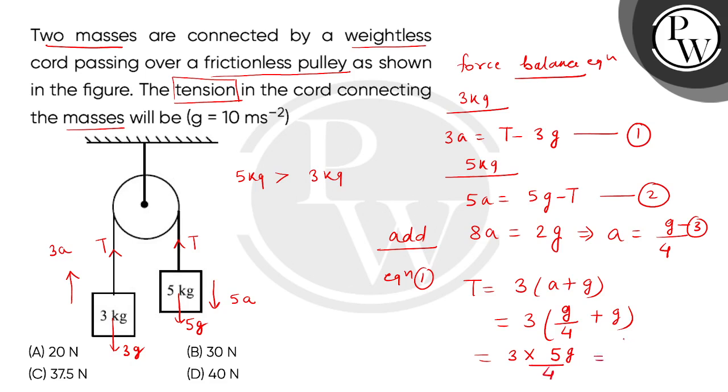This is 15 divided by 4 multiplied by 10. So this will come to be 150 divided by 4. The tension is 150 divided by 4, which equals 37.5 N.